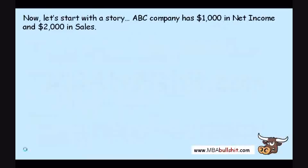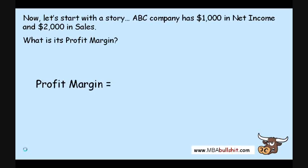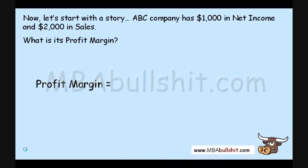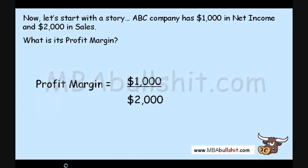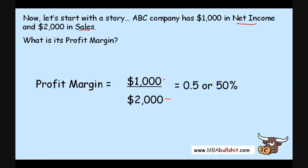Let's start with the story. Let's say that ABC Company has $1,000 in net income and $2,000 in sales. What is its profit margin? It's very simple. When it comes to financial ratios, the actual ratio is very simple — what's more important is what the ratio tells you. The computation is simply $1,000 divided by $2,000: net income divided by sales. We find a profit margin of 0.5 or 50%, which is quite high.